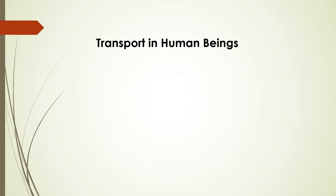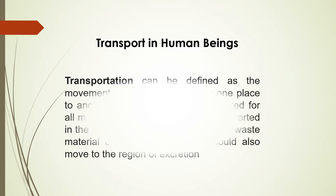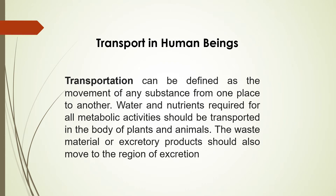If we talk about transportation in human beings, there is a need of a very complex transport system to carry oxygen, carbon dioxide, nutrients, waste products, food and various other substances from one part of the body to another. For that there is a need of a well-defined system, and in case of human beings, we call that system the circulatory system.